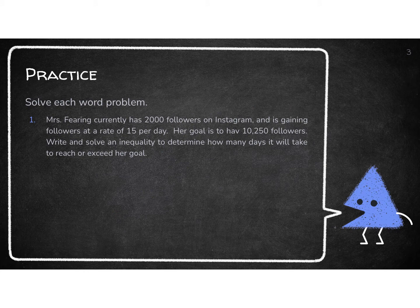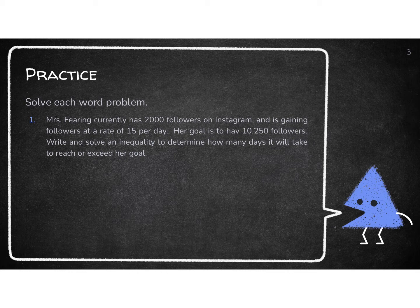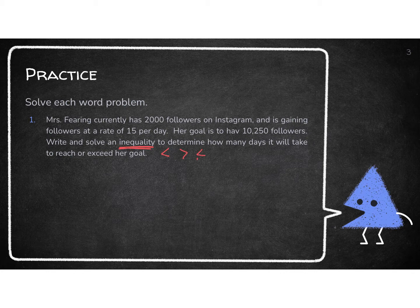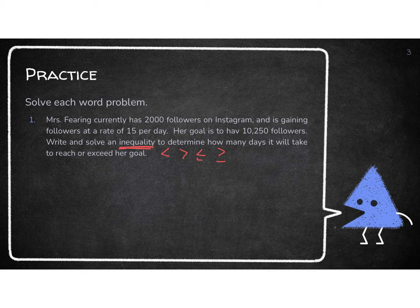So let's look at this first problem here. Miss Fearing currently has 2,000 followers on Instagram and is gaining followers at a rate of 15 per day. Her goal is to have 10,250 followers, right? And solve an inequality. So inequality tells me I'm going to have one of these symbols to determine how many days it will take for her to reach or exceed her goal. So I know I'm doing inequality. So now I'm going to start. What am I starting with?